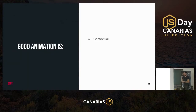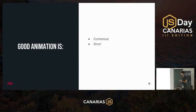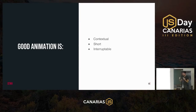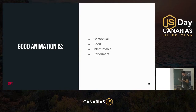First we need to define what a good animation actually is. Good animation is contextual — it helps explain things in context, so it shouldn't be meaningless or distracting. It should be short so it doesn't prevent the user from performing their action; animations of 300 milliseconds or less are usually preferred. Animation should be interruptible — if we transition between pages and the user clicks back, we don't want to wait for the whole animation to finish. And finally, animation should be performant, because otherwise it causes the application to lag and achieves the opposite effect.